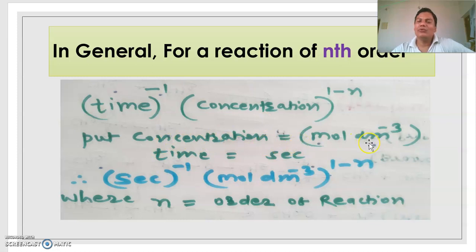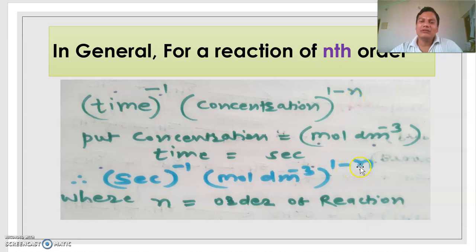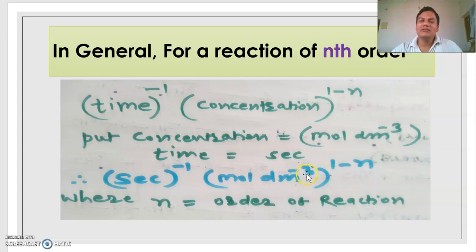Put concentration equal to mole per dm³ and time equal to second. The general formula gives unit of K as mole per dm³ to the power (1 minus n) per second, where n is the order. For first order, n equals 1, so 1 minus 1 is 0, giving unit as per second. For second order, n equals 2, so 1 minus 2 is minus 1, giving unit as dm³ per mole per second. In this way you can calculate the unit of rate constant for any order of reaction.